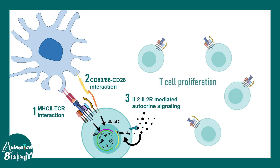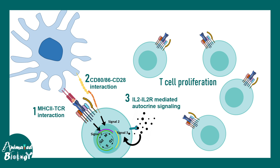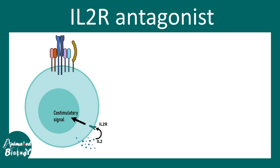Once re-entered into the cell cycle, T cells proliferate and expand clonally — this is called clonal expansion. Interleukin-2 receptor antagonists are heavily used in the context of autoimmune disorders and work as immunosuppressants. If the interleukin-2 receptor mediated co-stimulatory signal is absent, T cell activation is impaired, which is beneficial since autoreactive T cells harm the body in autoimmune disorders.